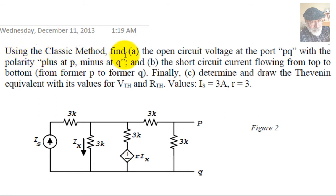Using the classic method, find A, the open circuit voltage on the port PQ, with the polarity plus at P and minus at Q. We want this voltage from P to Q, plus at the top, minus at the bottom.